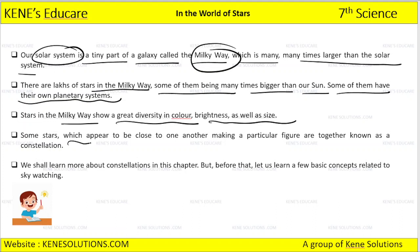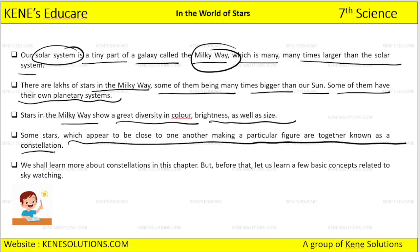Some stars which appear to be close to one another, making a particular figure, are together known as a constellation. We shall learn more about these constellations in the chapter.